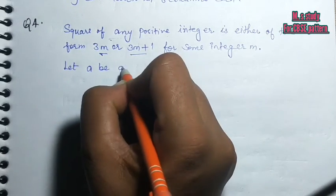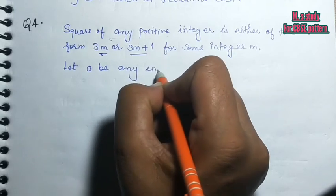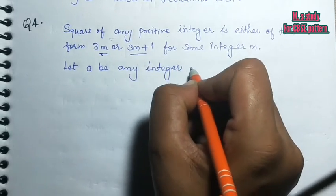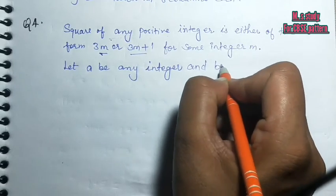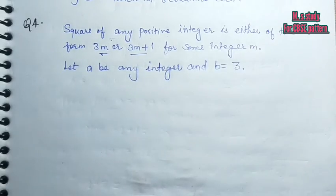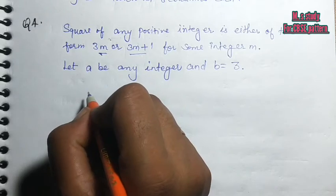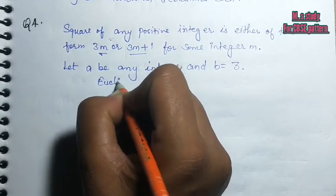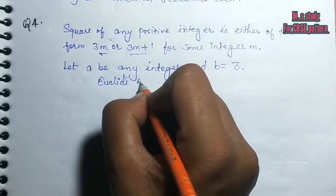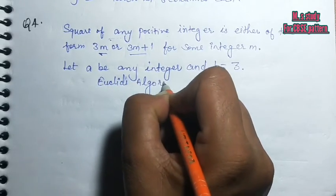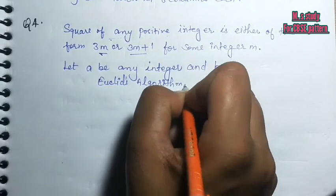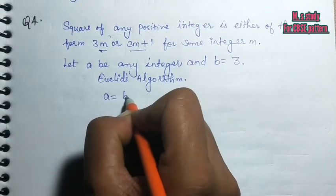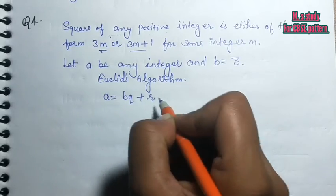Let A be any integer and B equals 3. Because we use Euclid's algorithm, according to Euclid's algorithm our formula is A equals BQ plus R.